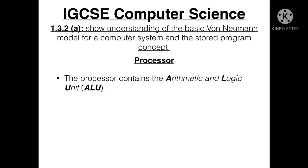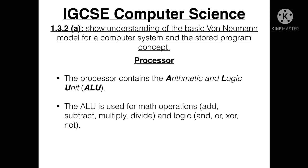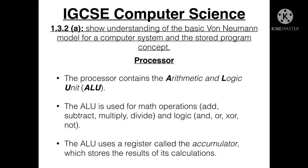Let's look at the processor. The processor contains the ALU — the Arithmetic and Logic Unit. The ALU is used for math operations such as add, subtract, multiply, and divide, as well as logic operations such as AND, OR, XOR, and NOT. The ALU makes use of a register called the accumulator, which stores the results of its calculations.